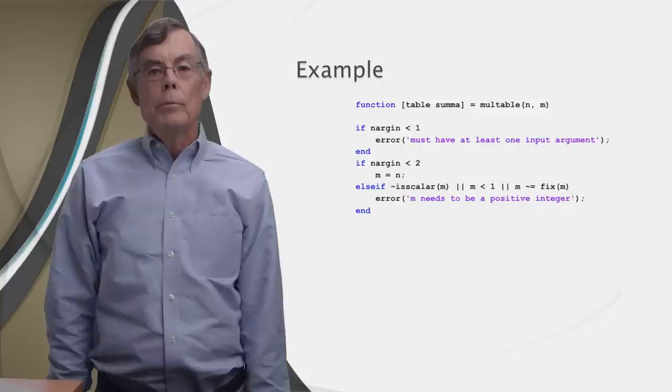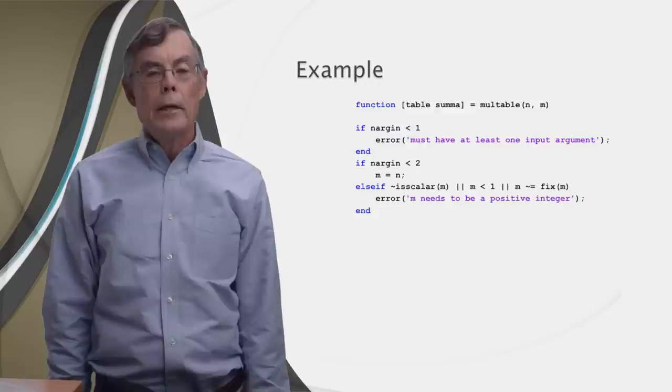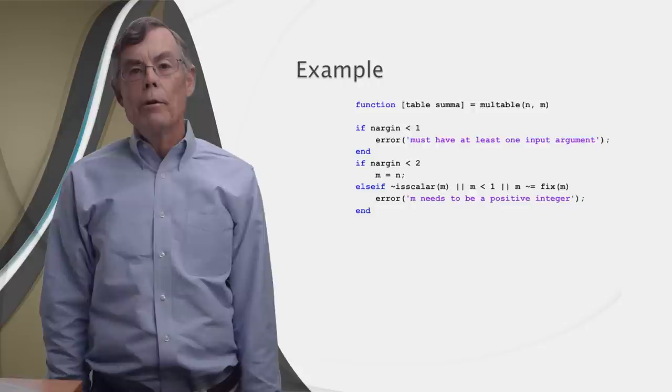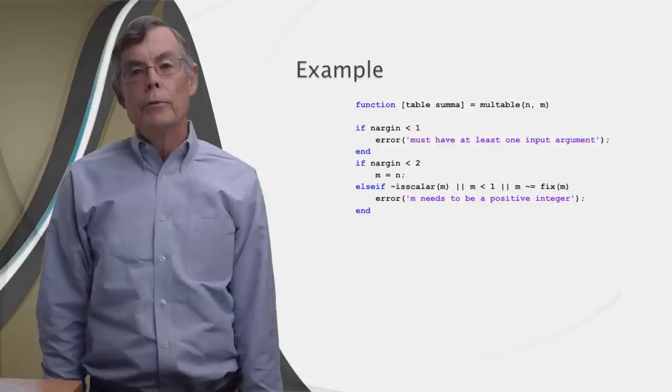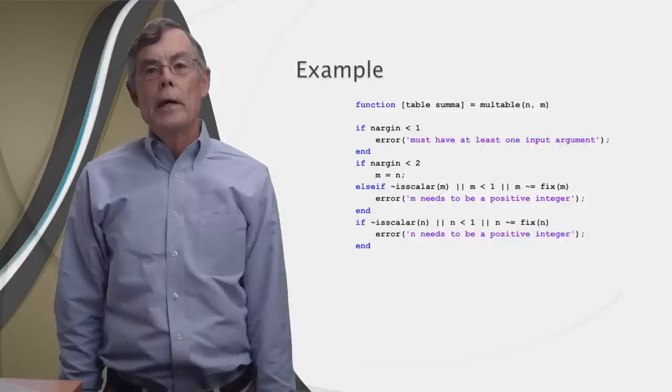And then we check for non-integer. Here's how we do that. We use the built-in fix function, which rounds its argument to an integer. If m is not an integer, then its rounded value won't be the same as m itself. If any of these conditions is true, then we have an error. So we use the error function, telling the user that m needs to be a positive integer. And then error automatically quits the function.